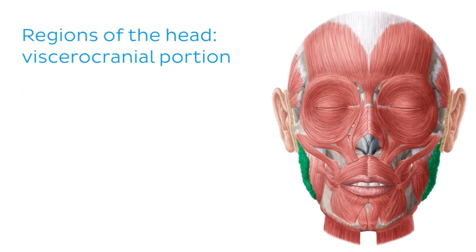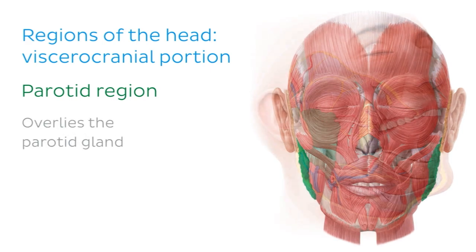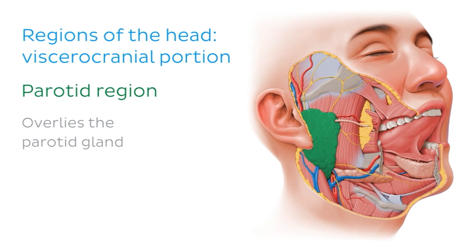The parotid region is the region of the face that overlies the parotid gland. Viewing the face from an anterolateral aspect, we can see the parotid gland more clearly. This region is located just below the ear and is also one of the five bilateral regions of the face.